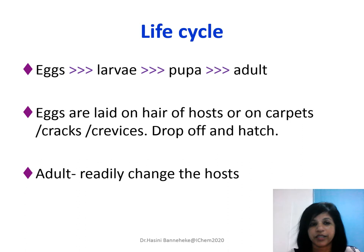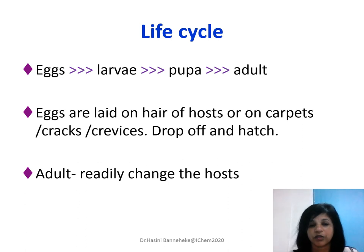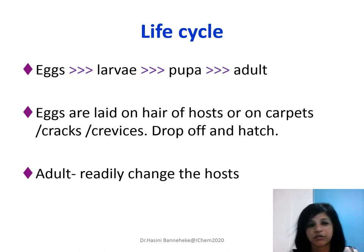In the life cycle, it is a complete life cycle. They have eggs which hatch into larvae, and larvae grow into pupae, and from the pupae the adult emerges. Generally, these eggs are laid on the hair of the host — that means a rodent, rat, dog, or cat — or on carpets on the surface, or in cracks and crevices on walls or structures. Those can also have eggs. The eggs drop off, hatch, and release larvae, and the adult flea can move from one host to another.